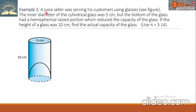Example 2. A juice seller was serving his customers using glasses. The inner diameter of the cylindrical glass was 5 cm, but the bottom had a hemispherical raised portion which reduced the capacity. If the height of the glass was 10 cm, find the actual capacity of the glass. Use pi equals 3.14.